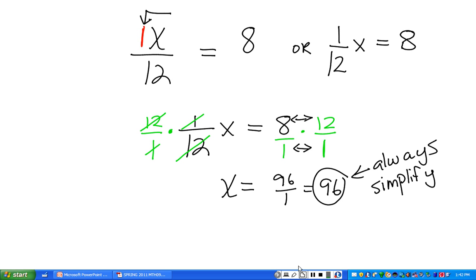Again, you can always check your answer by plugging your answer into x in the original. Instead of writing x over 12 equals 8, you can say does 96 over 12 equal 8? 96 over 12 is 8, so yes, it checks out. Let's go to another one.